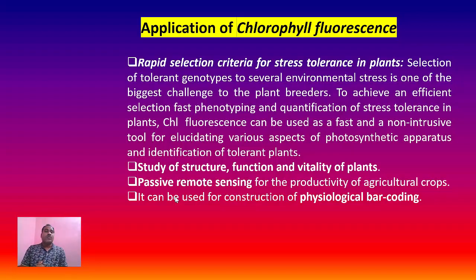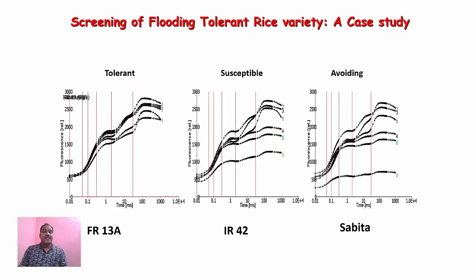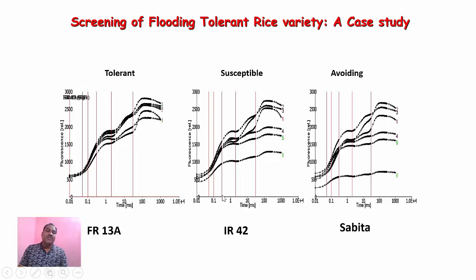As a case study, I want to discuss screening of flooding-tolerant rice varieties. These are three different types of O-J-I-P transients showing how they differ from one plant to another. One represents the tolerant variety, one is susceptible to submergence or flooding, and one is an intermediate type. The O-J-I-P transient has been measured and plotted, and you can see how this transient changes with different durations of submergence. Less change is observed in the tolerant variety, whereas more changes occur in the susceptible variety.